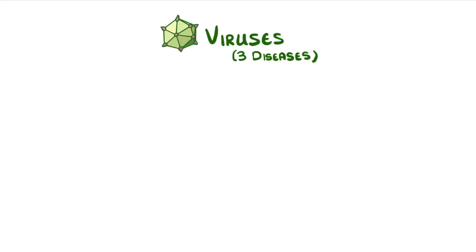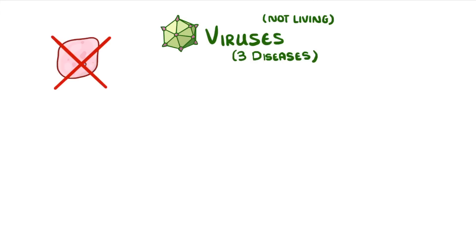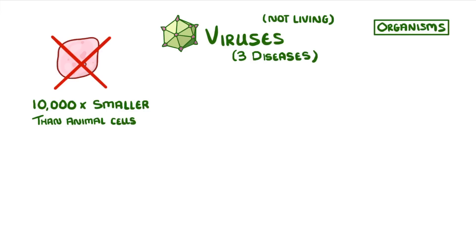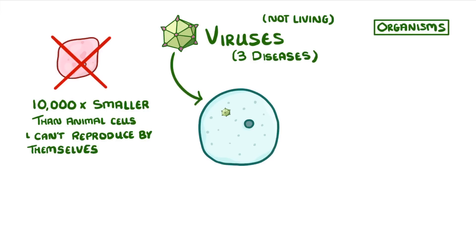In this video we're going to take a look at what viruses are and at three of the diseases that they can cause. Viruses are quite hard to explain — they aren't cells and they're not living, but we normally still consider them to be organisms. They're about 10,000 times smaller than animal cells and they can't reproduce by themselves. However, once they get inside another organism's cell, they can use that cell's own machinery to make loads of copies of themselves.